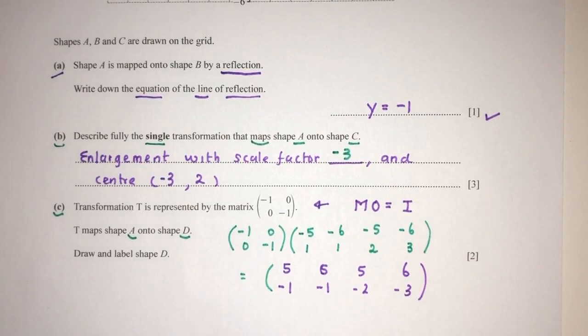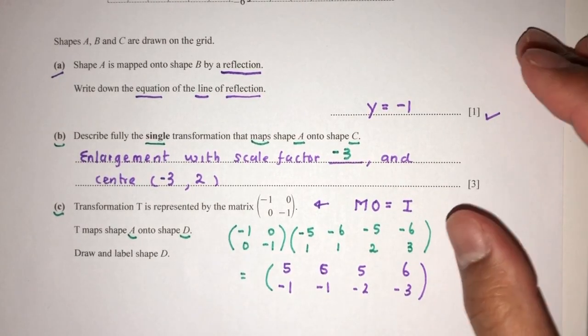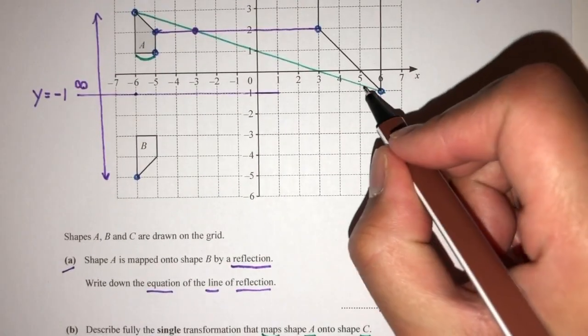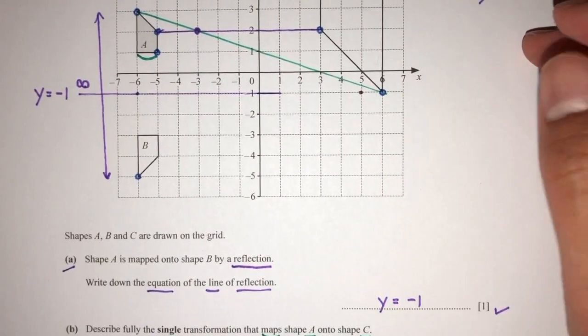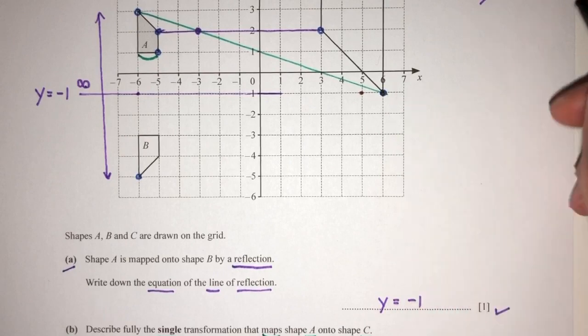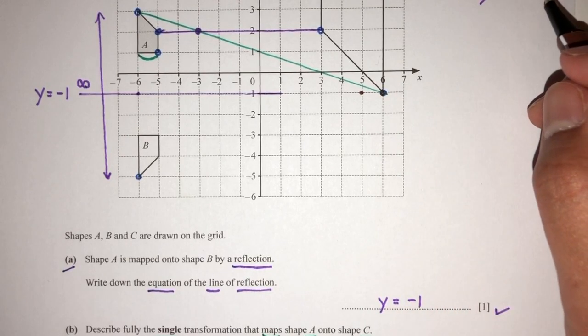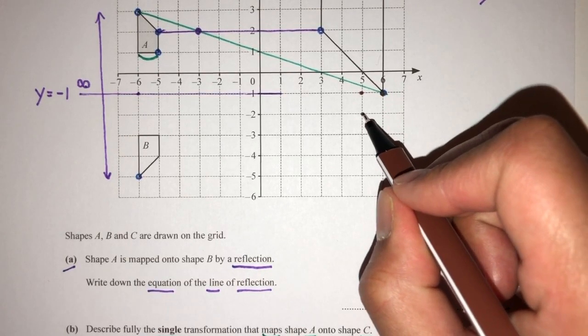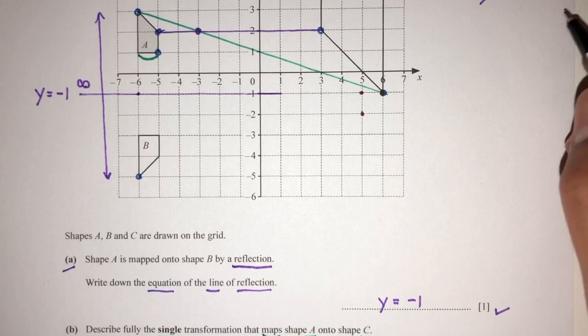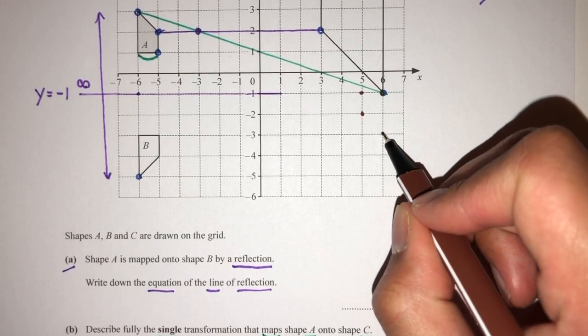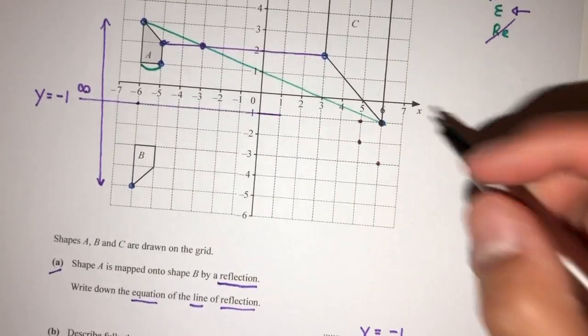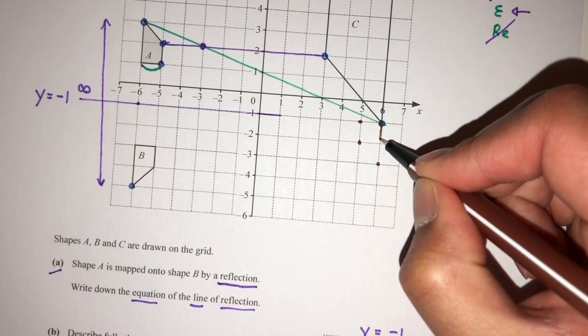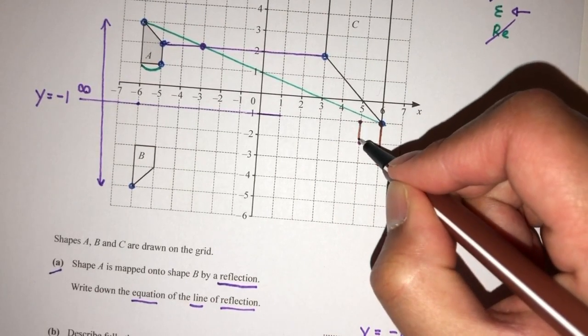Now let's plot all those points. Let's see what happens. So 5, -1 - that will be this one. We have 6, -1 - that will be this one. And we have 5, -2 - that should be this one. 6, -3 should be this one. We have this resulting shape from that matrix multiplication.